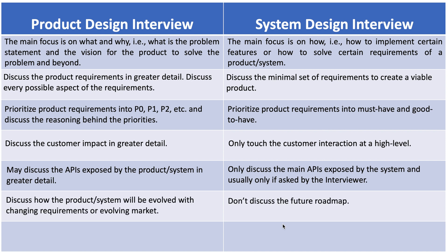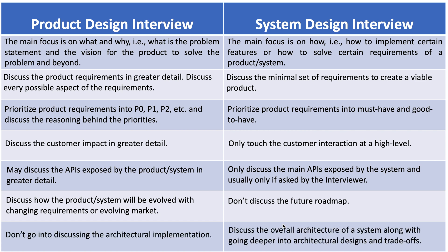In a product design interview, the candidate discusses how the product system will evolve with changing requirements or an evolving market. In a system design interview, candidates usually don't discuss the future roadmap. In a product design interview, candidates usually don't go into architectural implementation of the system, whereas in a system design interview, candidates discuss the overall architecture along with going deeper into architectural designs and trade-offs of individual components or microservices.